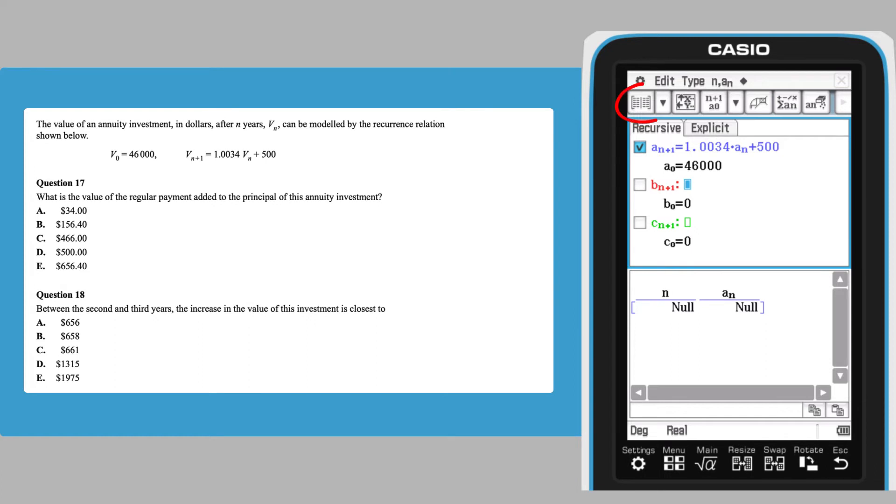Tapping the table icon in the top toolbar will generate values for A1 to A5 as default behaviour.